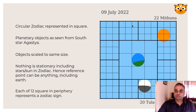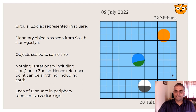Each of these 12 squares represents a zodiac sign. The Sun is shown in Mithuna — this square is Mithuna or Gemini — at approximately 22 degrees. The Moon is in the constellation of Tula or Libra at 20 degrees. Note that each square is divided into 30 degrees, with lines placed at 10 degrees and 20 degrees.